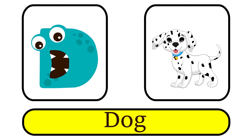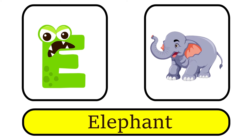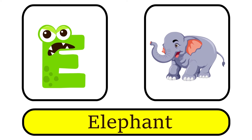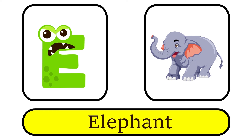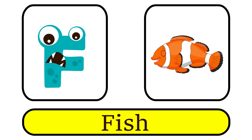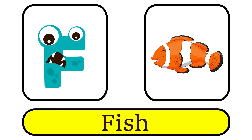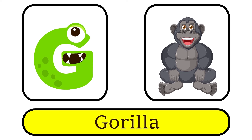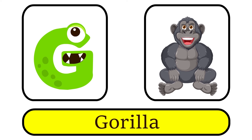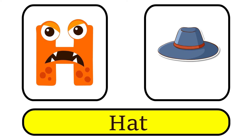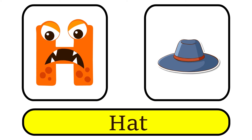E is for Elephant. A, A. F is for Fish. F, F. G is for Gorilla. G, G. H is for Hat. H, H.